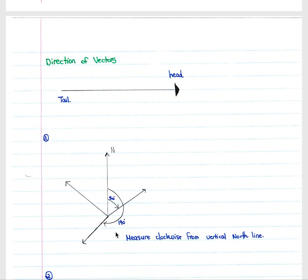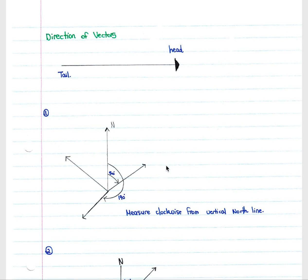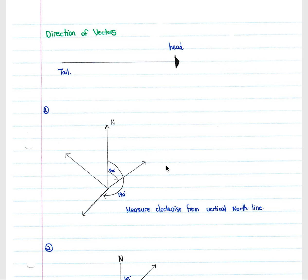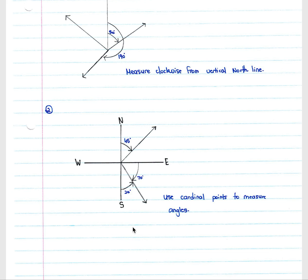When referring to vectors in physics, you will always have a direction. The head of the vector refers to the direction of travel and the tail is the back end. Direction can be measured using a vertical line depicting north, then measured as a bearing from the north line. Alternatively, you can use cardinal points — for example, 45 degrees east of north or 20 degrees east of south. It is up to you which method to use, as some will be easier in certain examples.